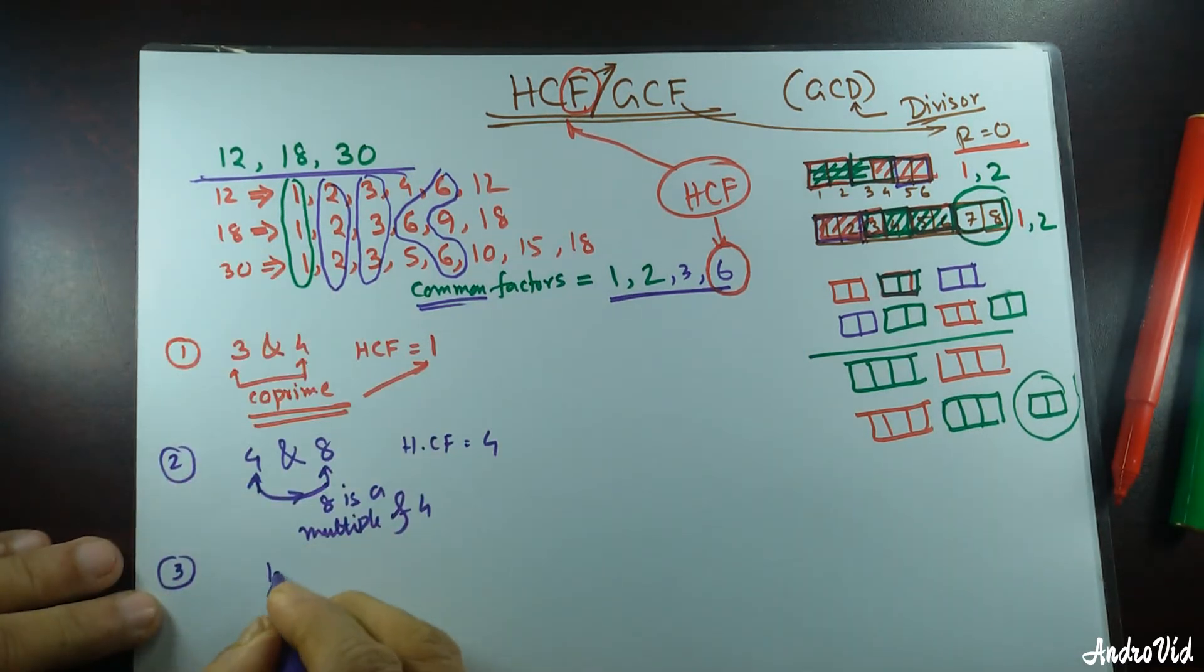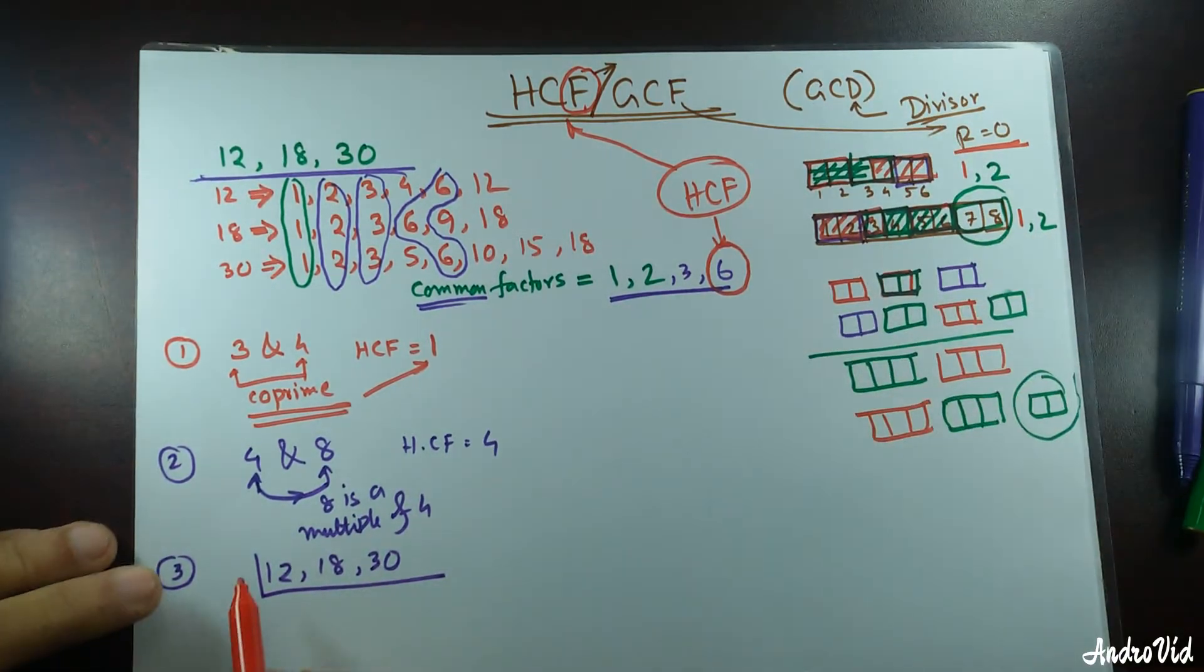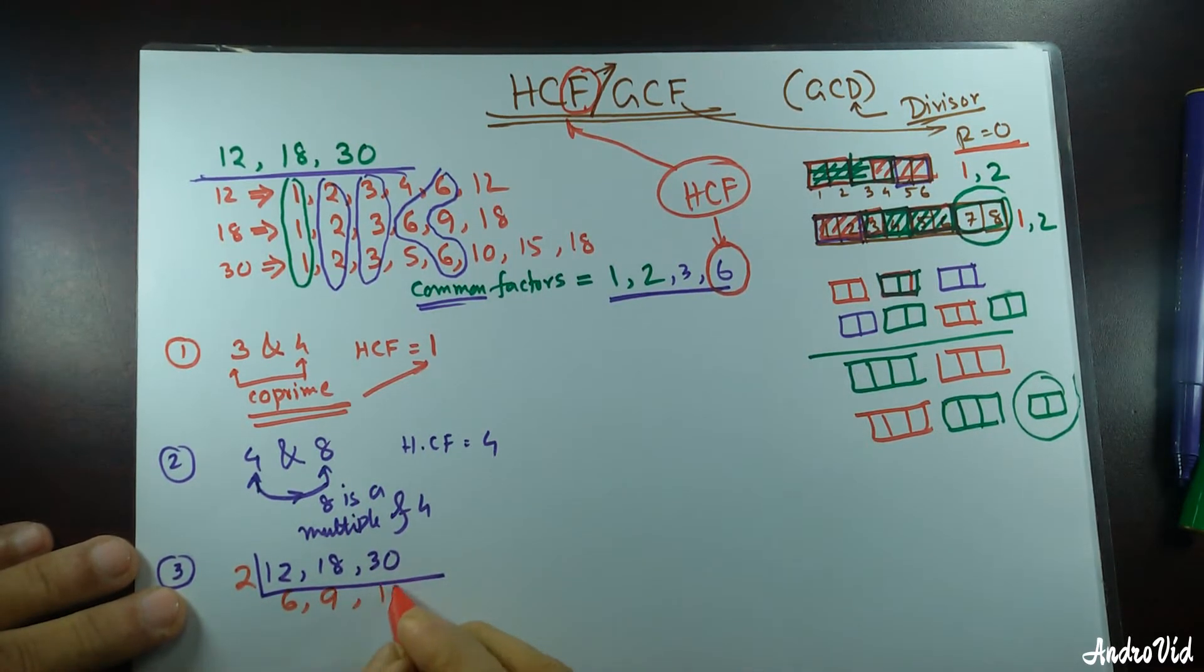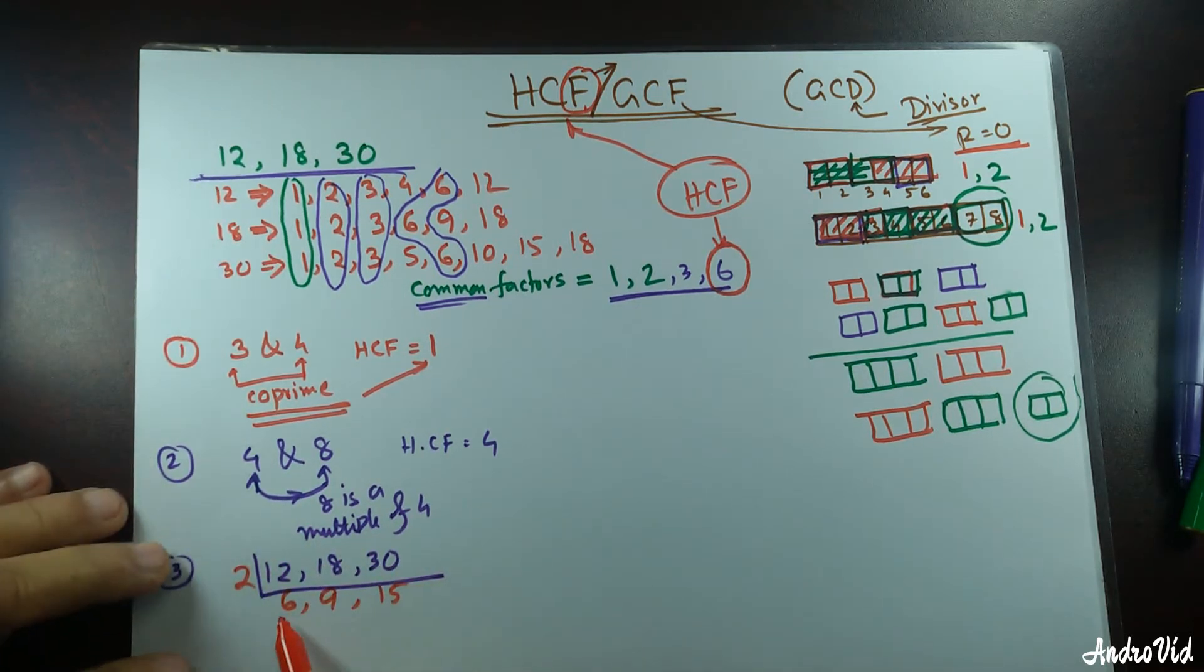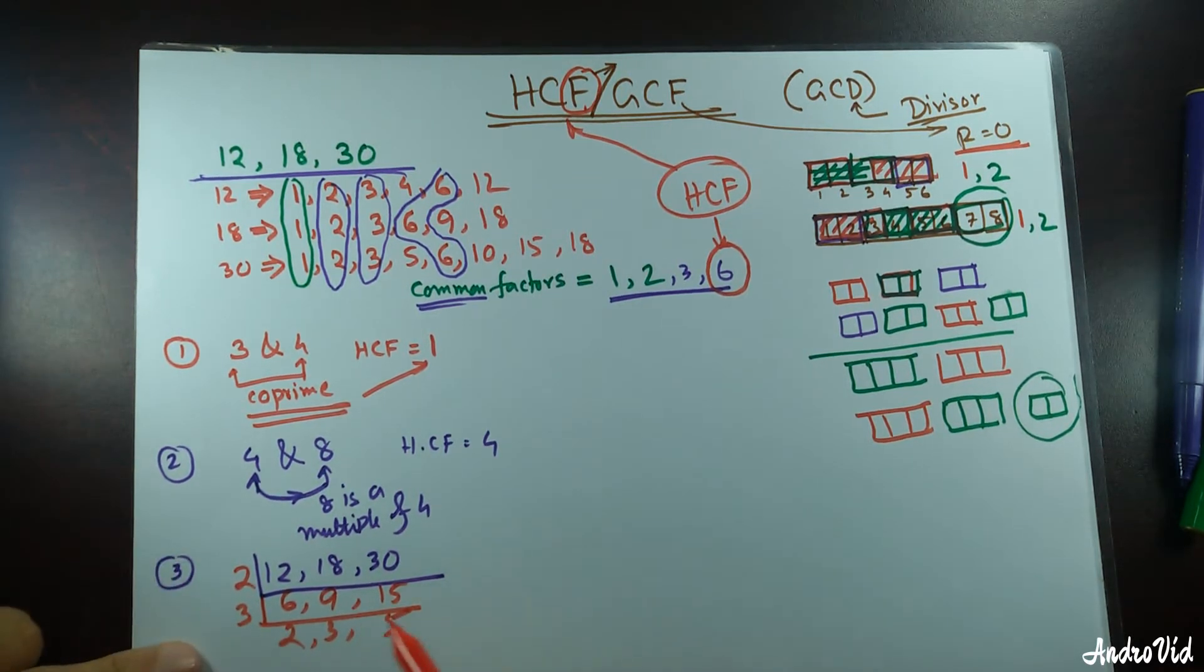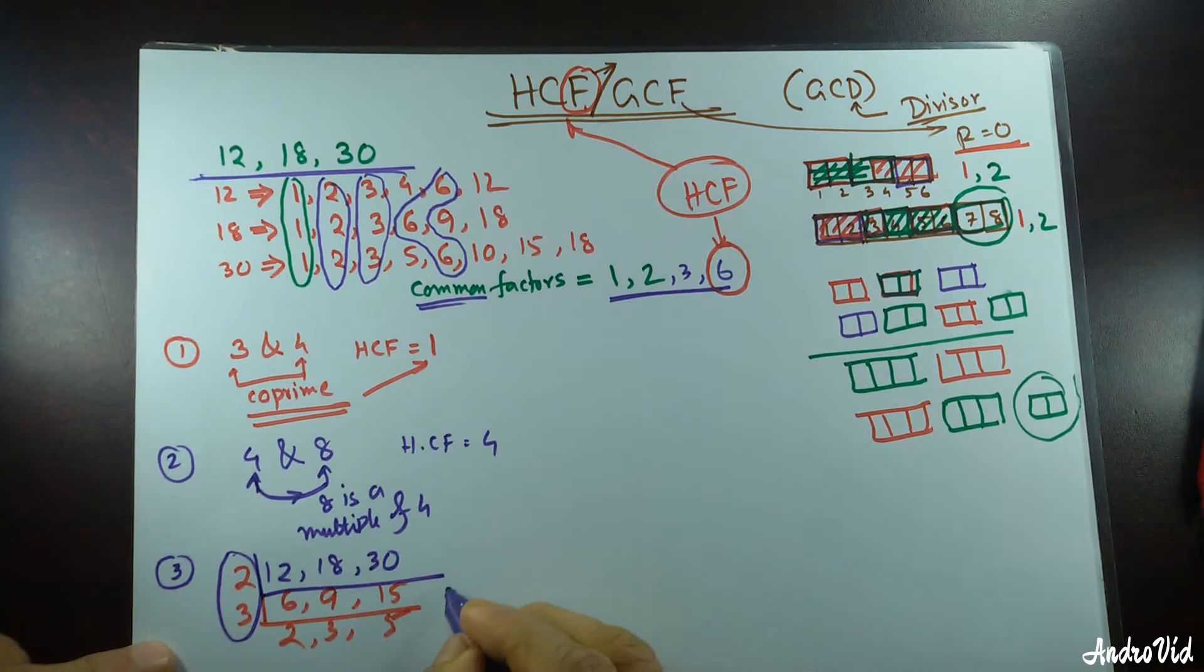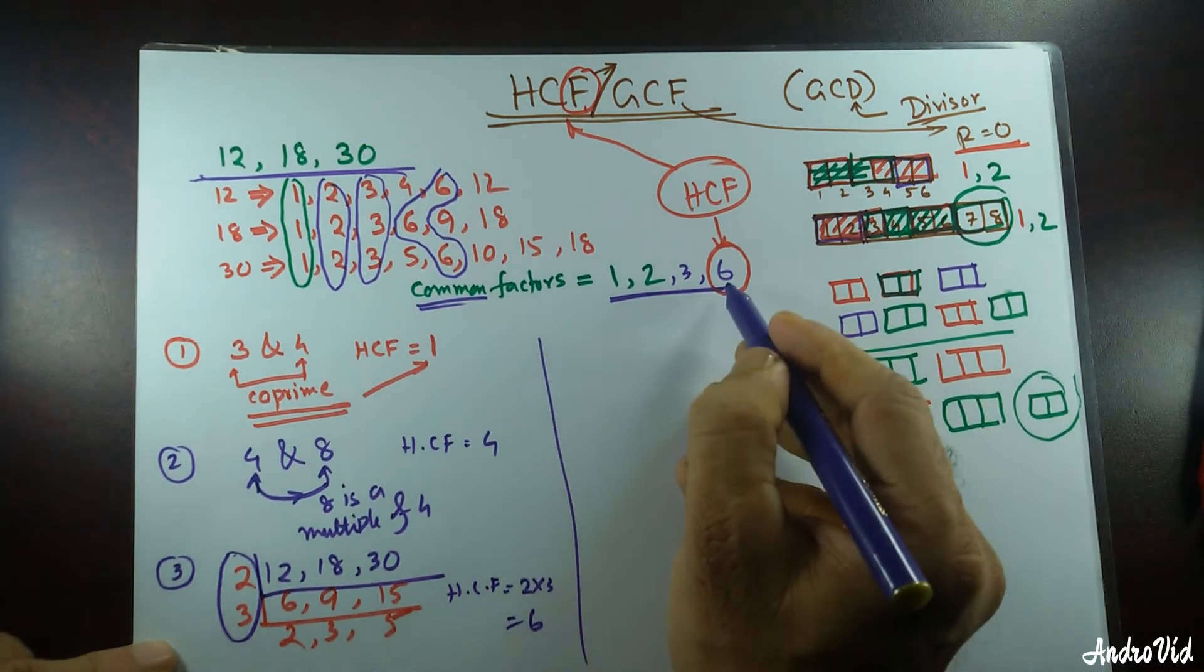That's 12, 18, and 30. Short division method, what I need to do, I need to find a factor that's common for all these three numbers. 2 times 6 is 12, 2 times 9 is 18, 2 times 15 is 30. Now, 9 and 15 are not divisible by 2. Can I divide it by 3? Sure. 3 times 2 is 6, 3 times 3 is 9, 3 times 5 is 15. There is no more common factor except 1, so my HCF would be 2 times 3 equal to 6.